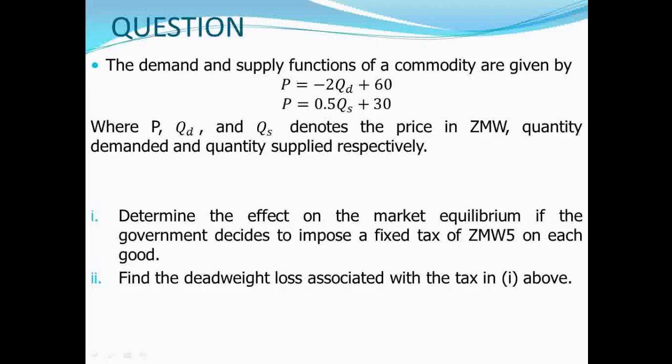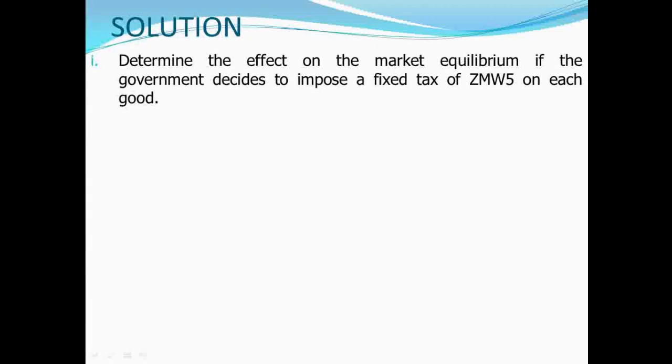Let's go straight into analyzing how our functions above can be affected by the imposition of a tax. Before the tax, the supply function was P equal to 0.5QS plus 30. Now, remember that when we are in equilibrium, the price that buyers pay will equal the price that sellers are receiving for supplying their commodity. When there is a tax imposed on the market, the price that buyers will be paying will not be the same amount that sellers will be receiving for their commodities.